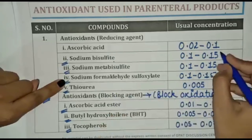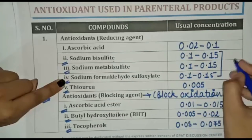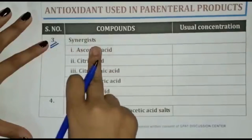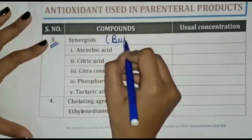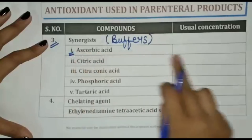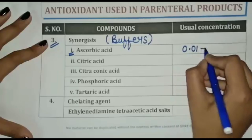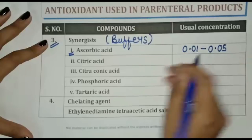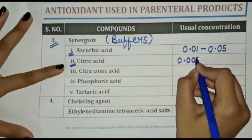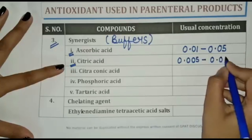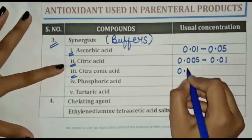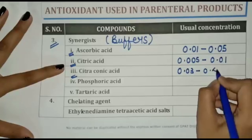It is easy to remember that sodium bisulfite, sodium metabisulfite, and sodium formaldehyde sulphoxylate have the same concentration range of 0.1 to 0.15. Synergistics — synergistics means buffers. Ascorbic acid concentration is 0.01 to 0.05. Citric acid concentration is 0.03 to 0.45.